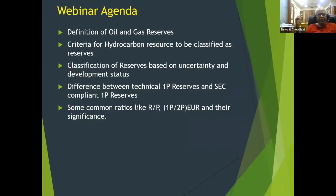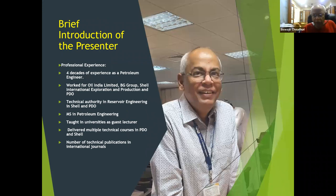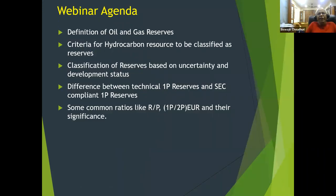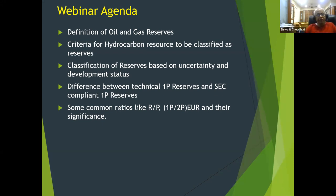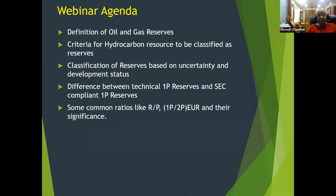As far as today's agenda of this webinar is concerned, we will start with the definition of oil and gas reserves, what criteria need to be followed for a hydrocarbon resource to be classified as reserves, classification of reserves based on uncertainty and development status, difference between 1P reserves and SEC — SEC stands for Security Exchange Commission — and some common ratios like R/P, 1P by 2P, and UR, which stands for expected or estimated ultimate recovery, and their significance.